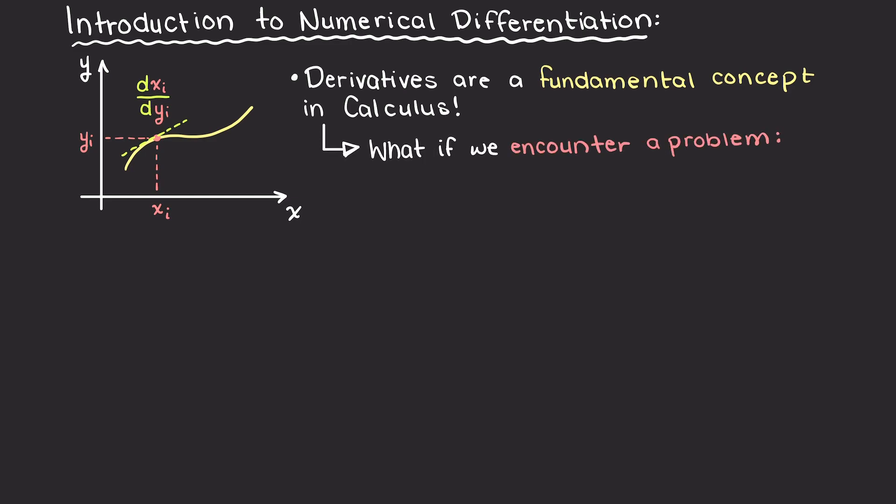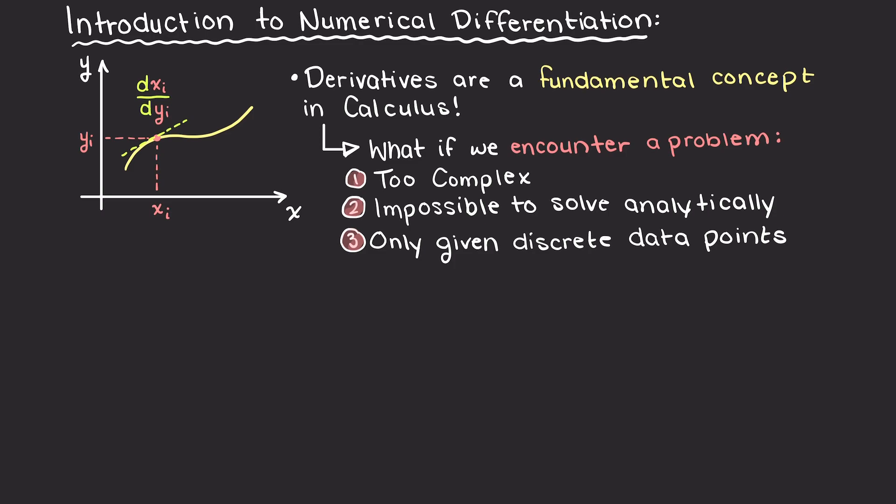But what if we encounter a function that is too complex, impossible to solve analytically, or we're just given a set of discrete data points and we need to find the rate of change at some point?